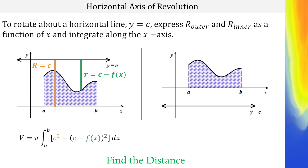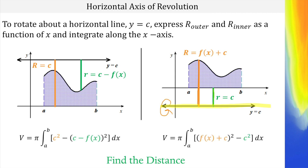Now let's do this other case where our axis of revolution is below the x-axis. We're still going to find the distance, but it looks a little different. The distance this time is going to be the height of the function plus the distance continued to the line y equals c — so it's the function plus c. And then the little distance is just the distance between the x-axis and c, so just c. Once we find our big R and our little r, we set up the integral as before: pi, then big R squared minus little r squared, in terms of x.